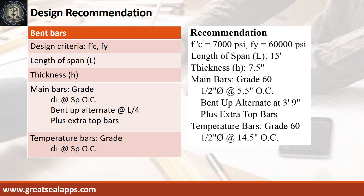Design recommendation as follows: fc prime equals 7,000 PSI; fy equals 60,000 PSI; length of span is 15 feet; thickness is 7.5 inches; main bars of grade 60, 1/2 inch diameter bar at 5.5 inches on center, bend up alternate at 3 feet 9 inches, plus extra top bars; temperature bars of grade 60, 1/2 inch diameter bar at 14.5 inches on center.